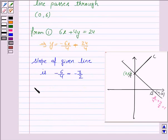Now we can find the slope of line AC perpendicular to the given line. The slope of a line perpendicular to the given line equals -1 divided by the slope of the given line. So this is -1/(-3/2), which equals 2/3.